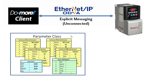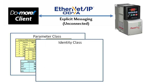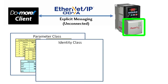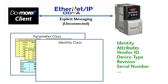Each class has its own set of predefined tables, but you access each one the same way. For example, let's look at the identity class. This is used to identify different components in a device. In our device we have the host drive itself and the Ethernet adapter — you might even have another communications adapter module connected to the drive. How would you get the vendor ID, device type, revision, or serial number? You would use this identity class.